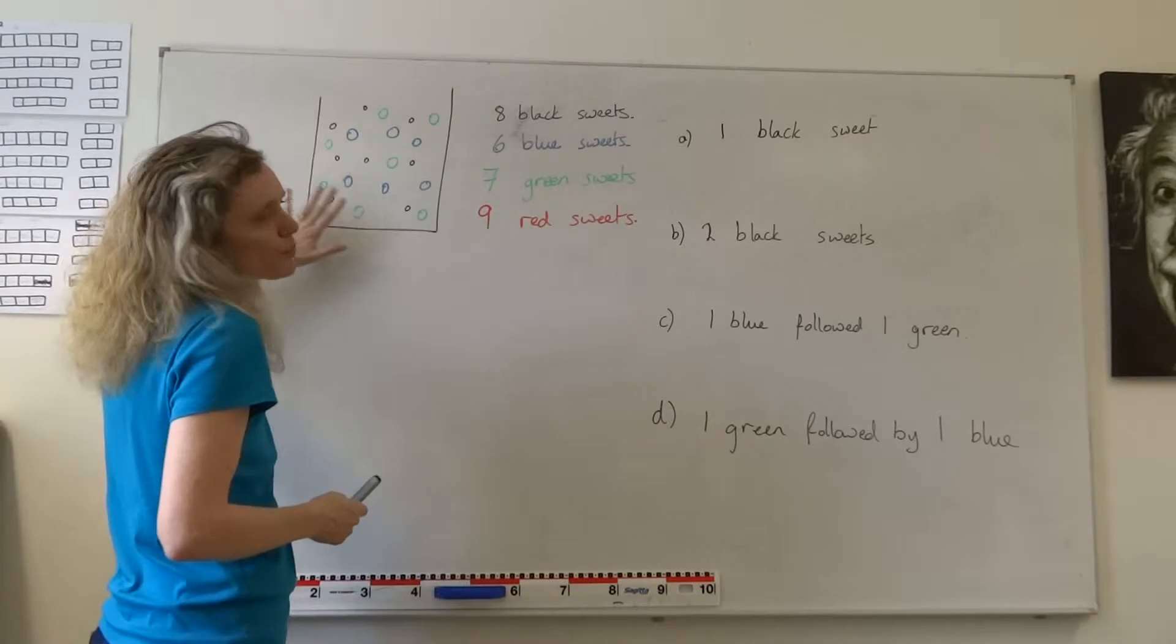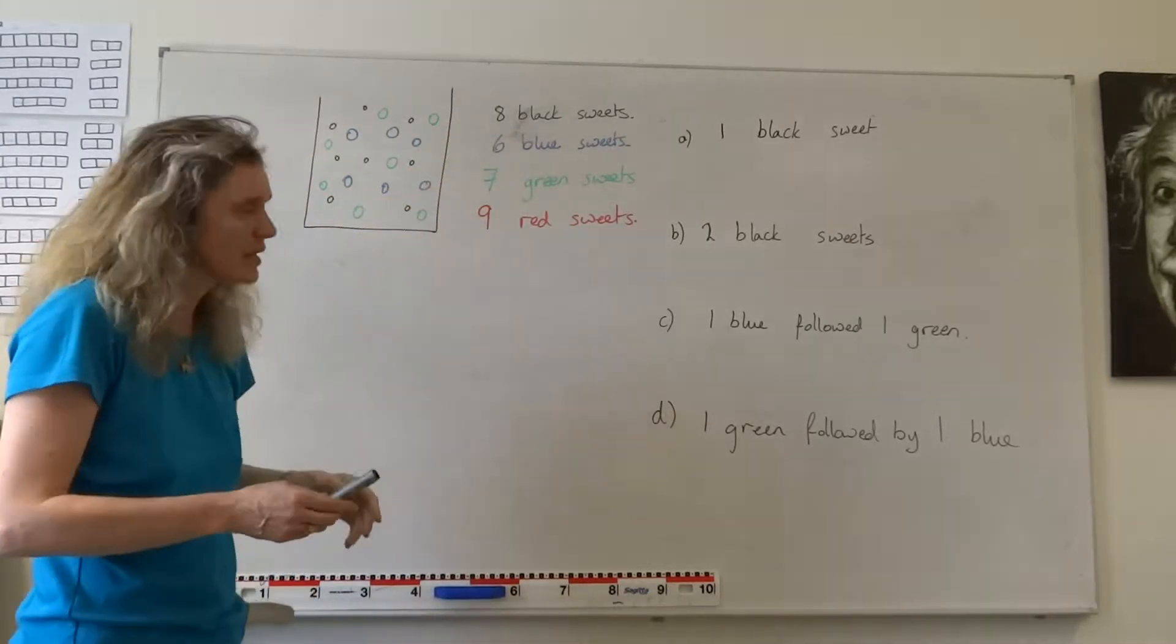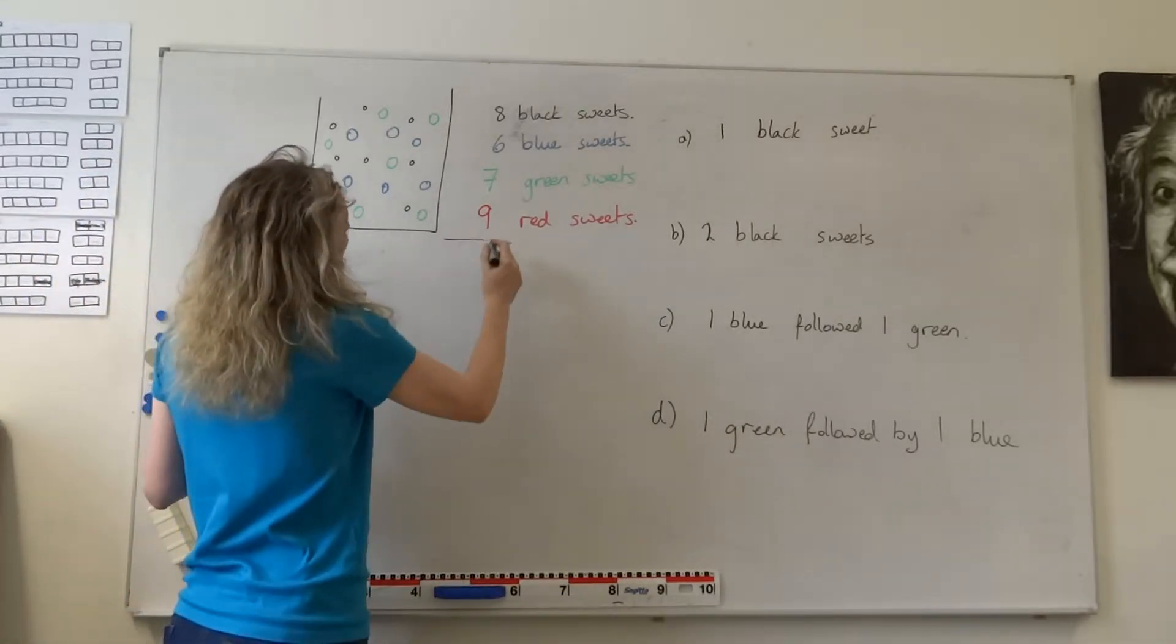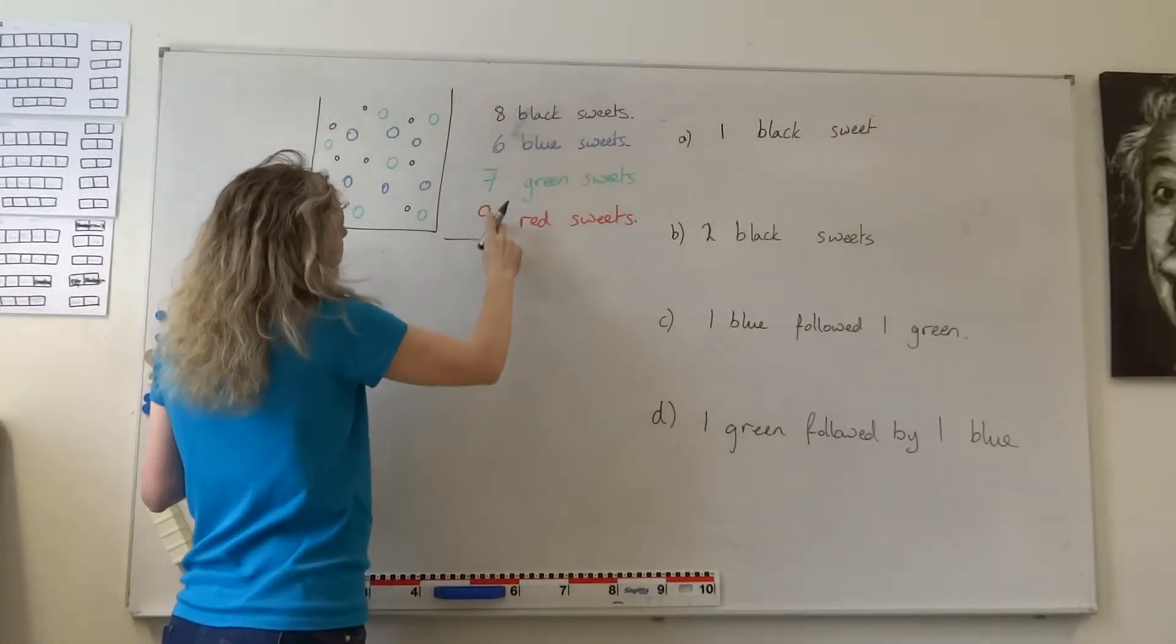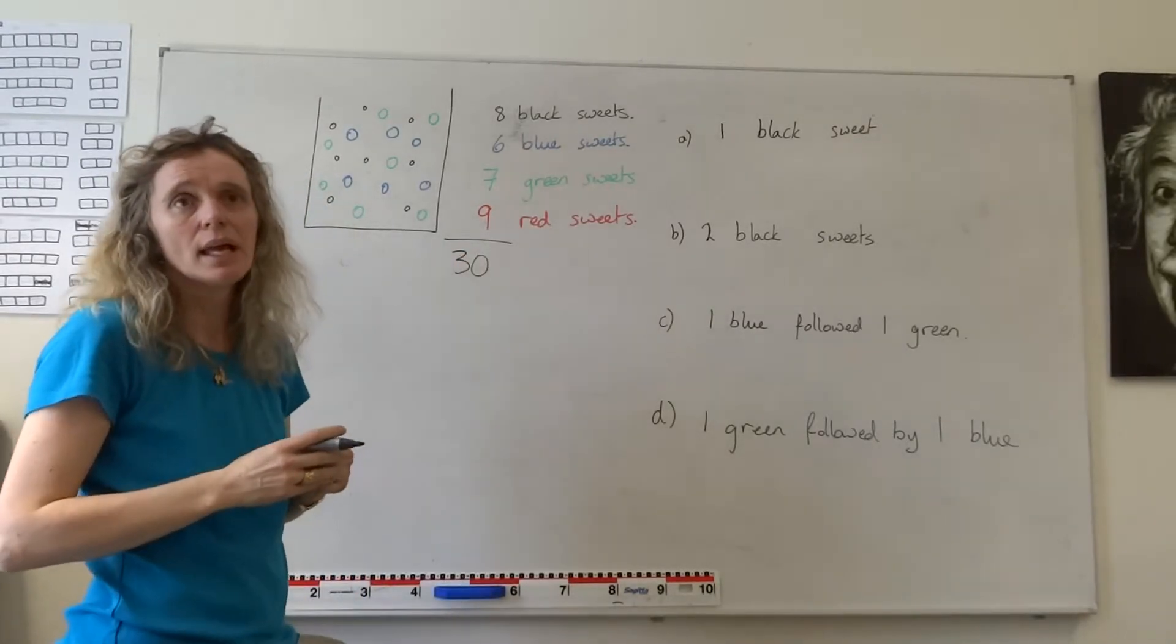And if we count up the sweets that are in the bag, we have 8 black, 6 blue, 7 green, and 9 red sweets. So if we add those up, we've got 8 and 7, 15, 21, 30. We've got 30 sweets in total in our bag.